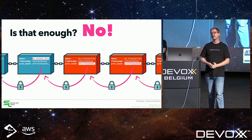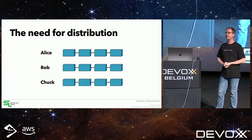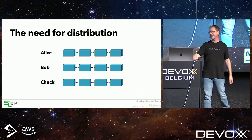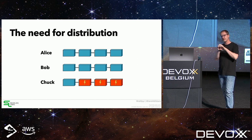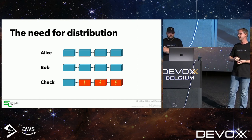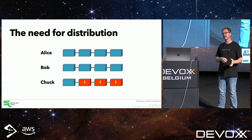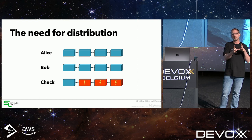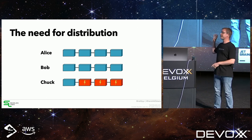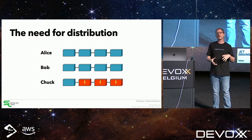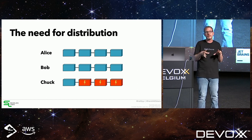With distribution: Alice, Bob, and evil Chuck each hold a copy. If Chuck tries to change his data, Alice and Bob quickly notice his blockchain looks different. You don't even need to compare the whole chain — just compare the latest hash. As long as the majority holds the same blockchain, you can identify who is acting unfairly. In reality with dozens, hundreds, or thousands of nodes, this kind of attack becomes very hard.